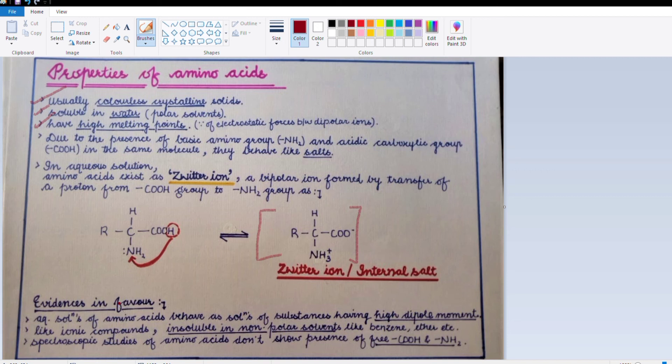After that, what are the evidences in favor of zwitterion formation? If a concept exists, there should be supporting evidence. Evidences in favor of the formation of zwitterion: The first one is that aqueous solutions of amino acids behave as solutions having high dipole moment. High dipole moment indicates the presence of charges, which gives us the hint that amino acids exist in zwitterion form.